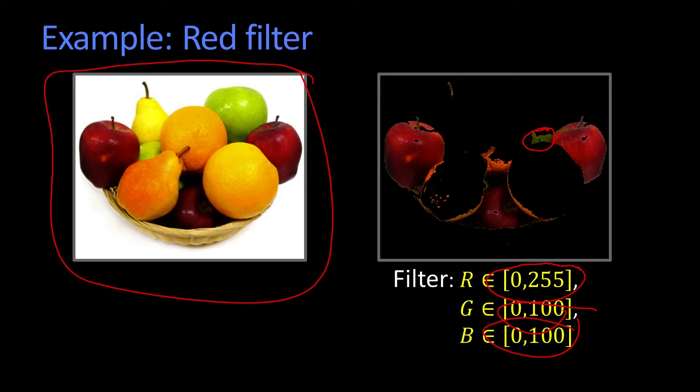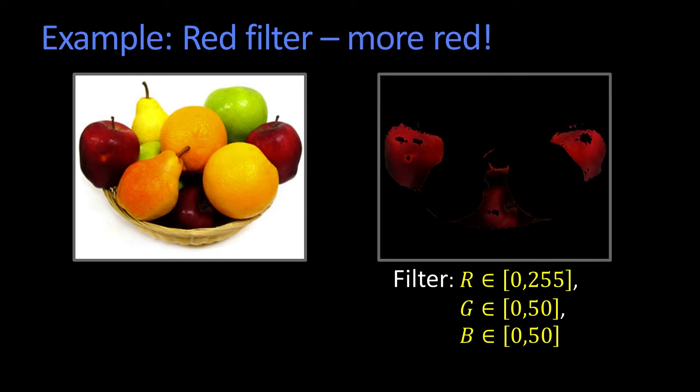Suppose I want it to be even more red. So you might say, let me require that the green and the blue be even lower. You start to see that you've lost, first of all, you've got these edges here, these pixels on the thing, and you've lost some of the red pixels that you wanted in the apple.